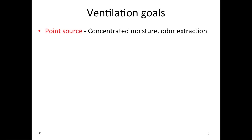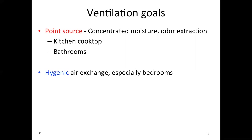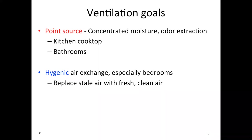When thinking about ventilating buildings — and we're all making tighter buildings now, so ventilation is becoming more important — I think of two categories. First, point source: we ventilate to remove concentrated moisture and odors, primarily from kitchen cooktops and bathrooms. Second, hygienic air exchange: of a general, distributed nature, not point source — not concentrated. We're talking about generally the living spaces, and in particular bedrooms, because they're small rooms and we tend to close the doors. We develop carbon dioxide concentrations there and want to replace stale air with fresh clean air.